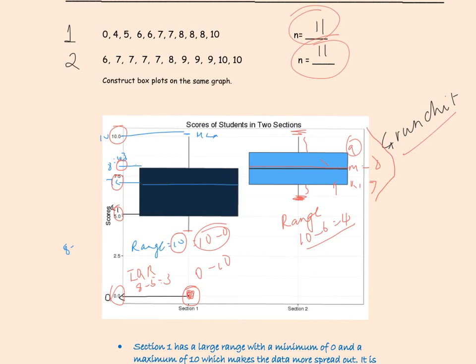Looking at the shape of the distribution in the second section, it looks almost perfectly symmetrical — the whiskers are the same size and the median runs right in the middle. Overall comparing the two sections, the box plot for section 2 is set much higher, showing scores were much higher, and the range was much smaller, meaning the scores for section 2 were more consistent.